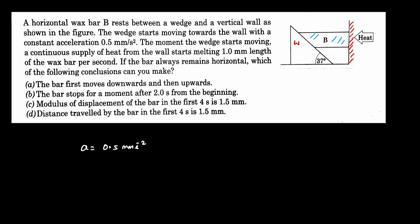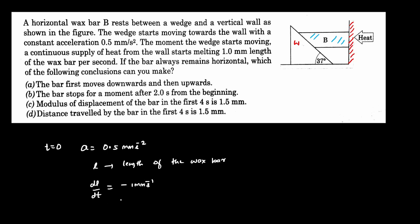The moment the wedge starts moving, a continuous supply of heat from the wall starts melting 1 millimeter length of the wax bar per second. At t = 0 the wedge starts accelerating, and if I assume l is the length of the wax bar, this length will decrease at a rate of 1 millimeter per second — so dl/dt = −1 mm/s. The bar always remains horizontal.